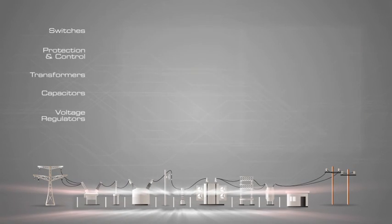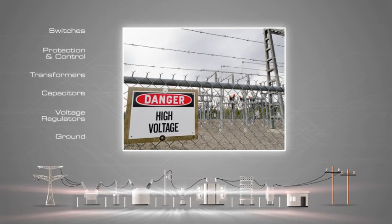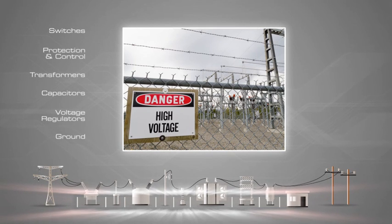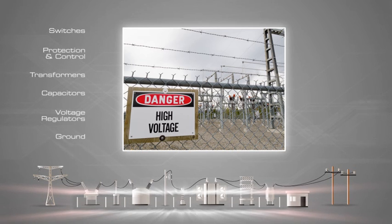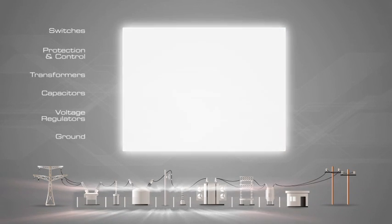Where a substation has a metallic fence, it must be properly grounded to protect people from high voltages that may occur during a fault in the network. Currents flowing in the Earth's surface during a fault can cause metal objects to have a significantly different voltage than the ground under a person's feet. This touch potential presents a hazard of electrocution.